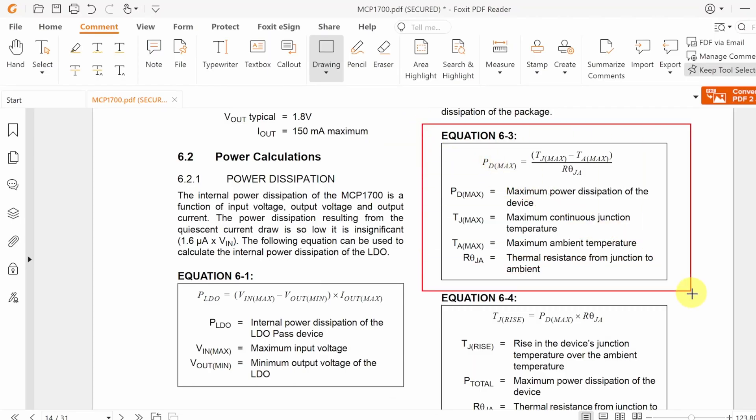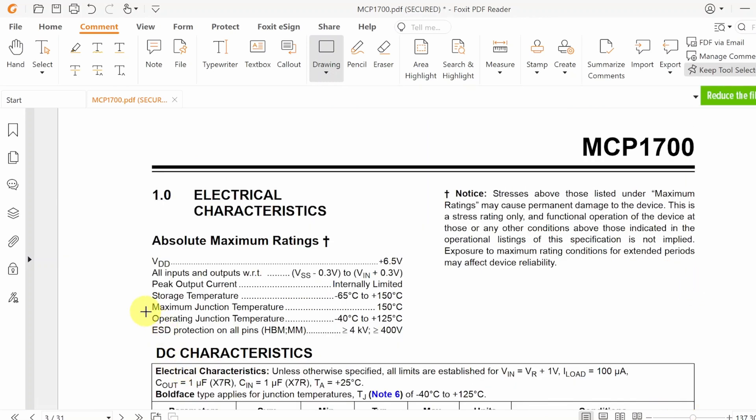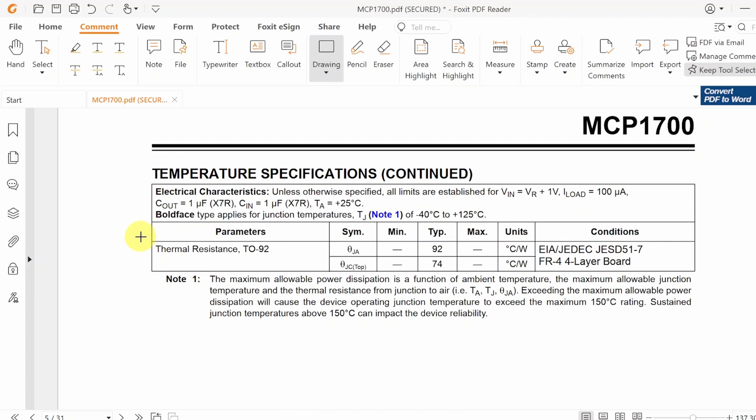Maximum power dissipation capability of the regulator IC can be calculated using equation 6.3. For the MCP700 regulator, maximum continuous junction temperature is 125 degrees Celsius and thermal resistance from junction to ambient for the T192 package is 92 degrees Celsius per Watt.